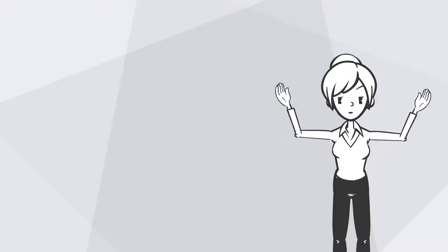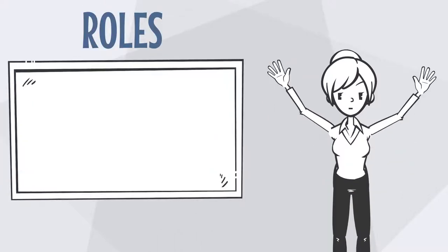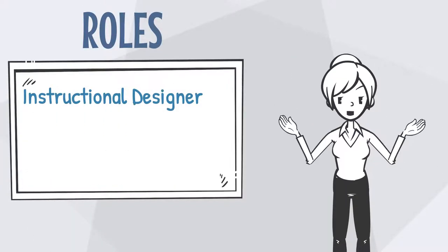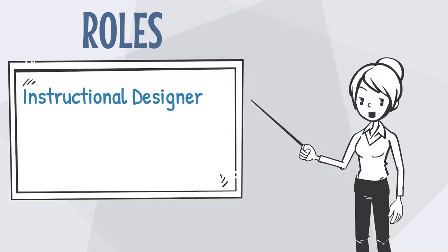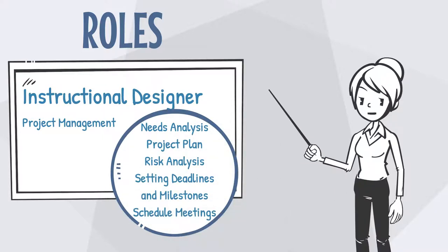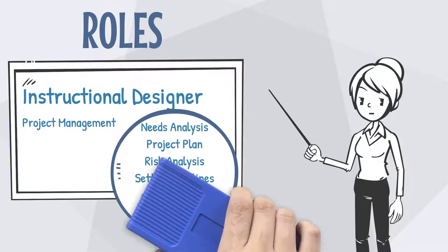Let's dive right in and discuss ID and SME roles. The ID team leads the learning development process. They are responsible for project management responsibilities, such as performing needs analysis, creating project plans, setting deadlines and milestones, and scheduling meetings and check-ins.